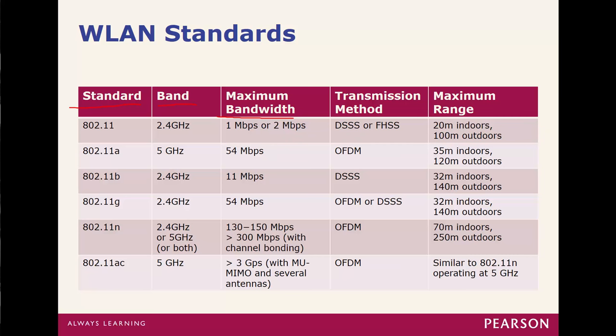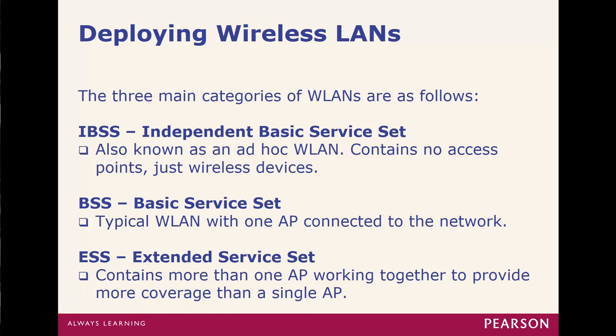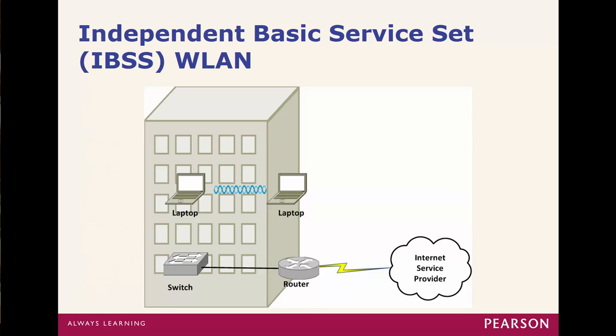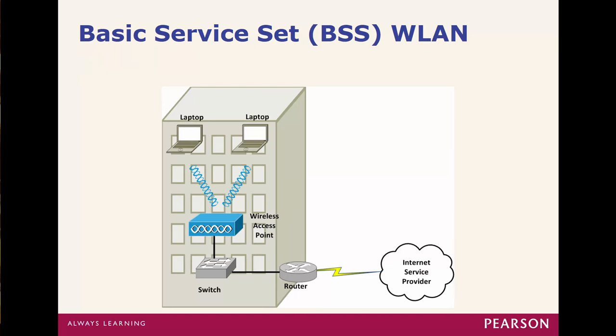Deploying wireless LANs: there are three main categories. The Independent Basic Service Set (IBSS) is used for ad hoc — no access points, just wireless devices. A Basic Service Set (BSS) is the typical wireless LAN with one access point. An Extended Service Set (ESS) allows for multiple access points. With IBSS, everything is decentralized point-to-point. BSS is just one access point everything connects to, which works for a small facility.